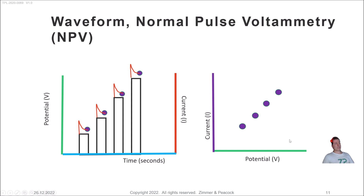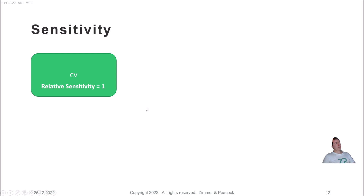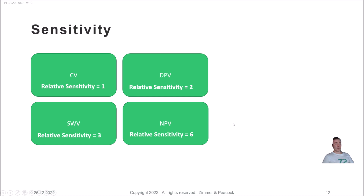So today we've touched upon and introduced three types of pulse voltammetric techniques: square wave voltammetry, differential pulse voltammetry, and normal pulse voltammetry. We've focused on the waveforms. I also want to talk briefly about sensitivity, because it's lauded as a key metric. For example, if you measure ferrocyanide using cyclic voltammetry and give that peak current an arbitrary value of one, you might find that DPV has a peak height of two, SWV is about three times as sensitive as CV, and NPV is maybe six times as sensitive.